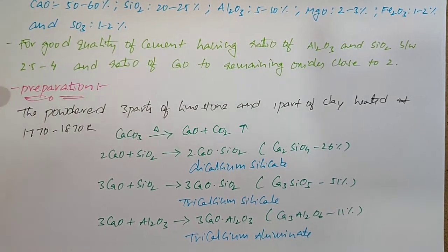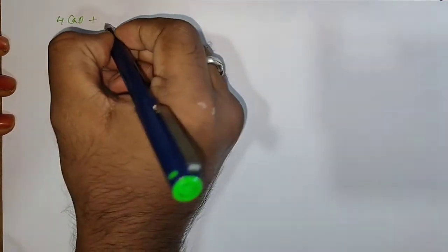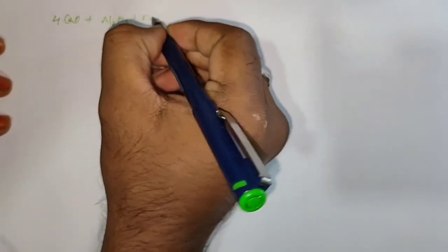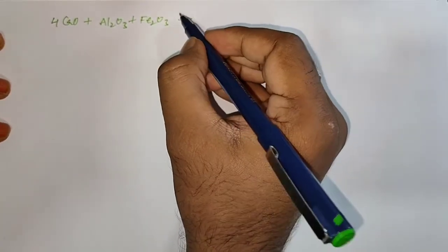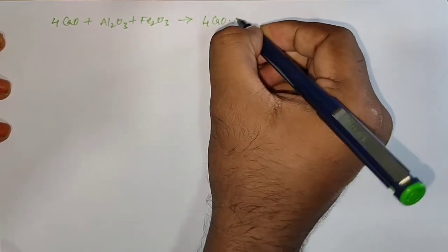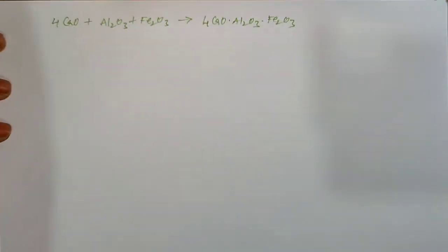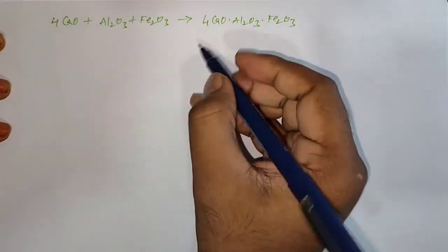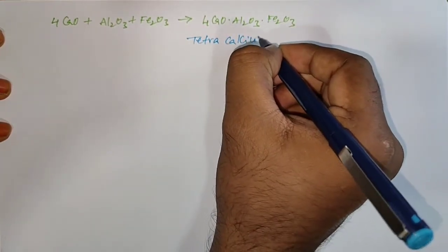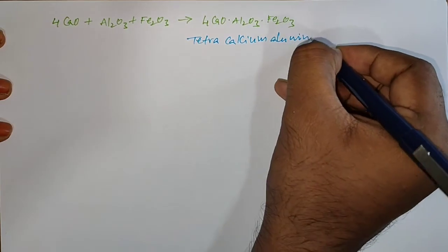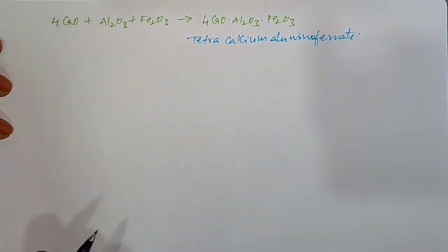Next equation: when four moles of Calcium Oxide combine with one mole of Alumina and one mole of Ferric Oxide, it gives Tetracalcium Aluminoferrite. Those are the reactions that take place in the preparation of Cement.